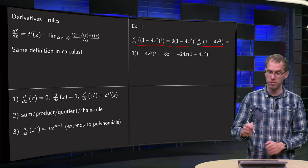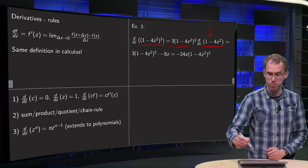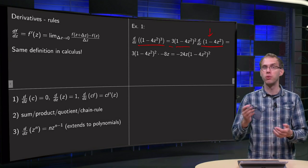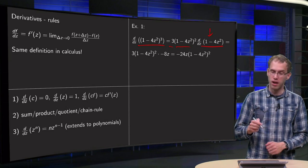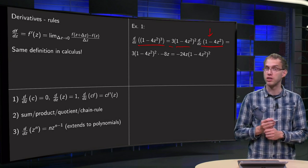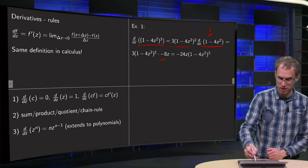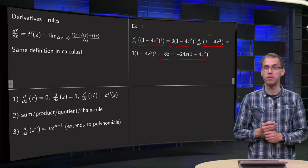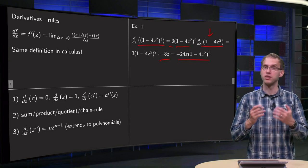But then we see that here you have a polynomial, you can use the chain rule and the product rule, etc. To differentiate 1-4z² is just -8z, so our derivative will be -24z(1-4z²)².